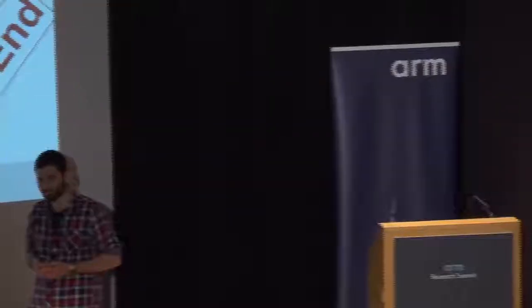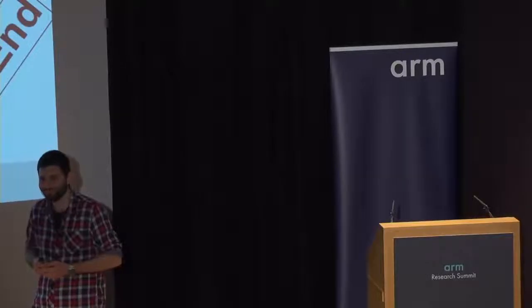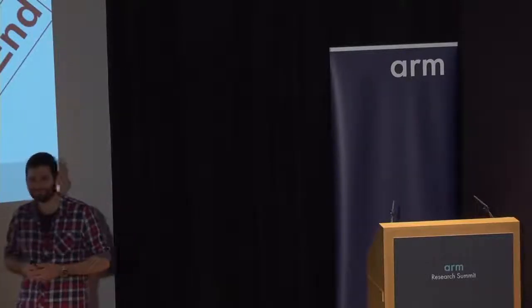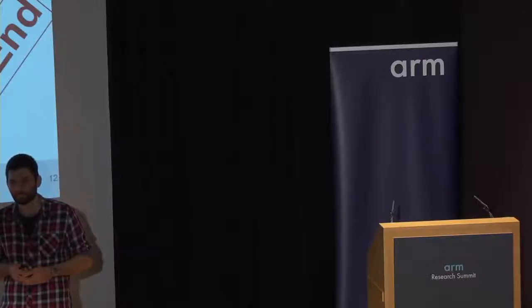I have a question. If you have a chain of dependent accesses and the first one is speculative, it seems like they would all go to the ghost buffer. In the end, you would just have everything going to the ghost buffer in the worst case. Can you talk a little bit more about how you separate out ghost accesses from non-ghost accesses?